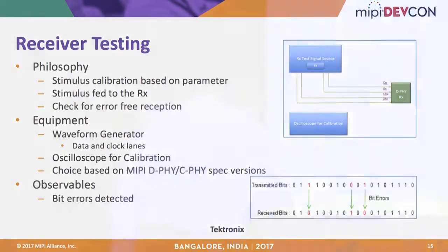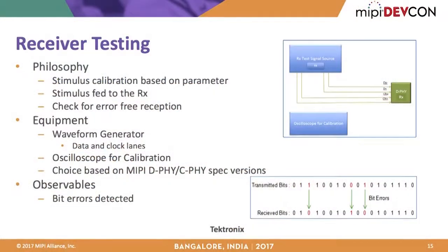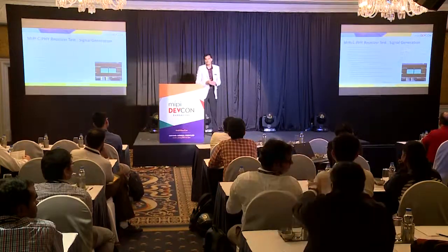Thanks. To make up for time, a quick overview of receiver testing: based on the test requirements, you generate an appropriate stimulus and feed it to the receiver of the device under test. By some mechanism — typically a bit error detector built into D-PHY and C-PHY designs — you ascertain whether reception was error-free.